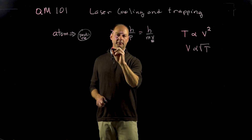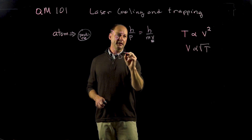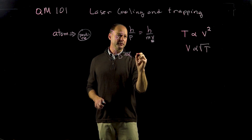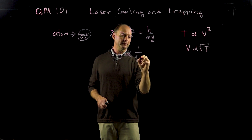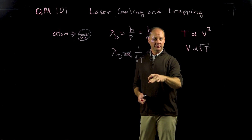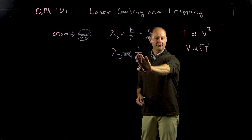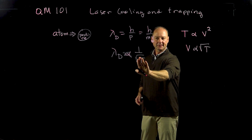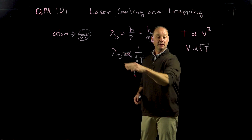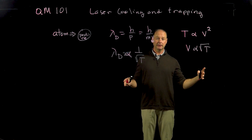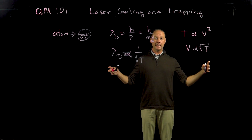What we find is that the de Broglie wavelength is proportional to one over the square root of temperature. That means if I can lower the temperature — make the temperature smaller — it makes the denominator smaller, which makes the wavelength bigger. I can get the wavelength of the atom to be on the scale of something I can measure in the lab.